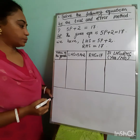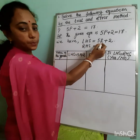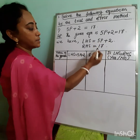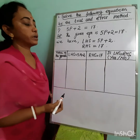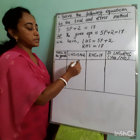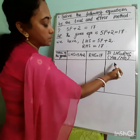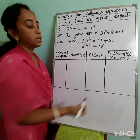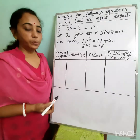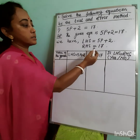We will make a table. The table shows the value of the variable p, then left hand side equals 5p + 2, right hand side is 17, and the last column shows whether left hand side equals right hand side. If both are equal we write yes; if not equal we write no. The value of p for which both sides are equal is the solution.